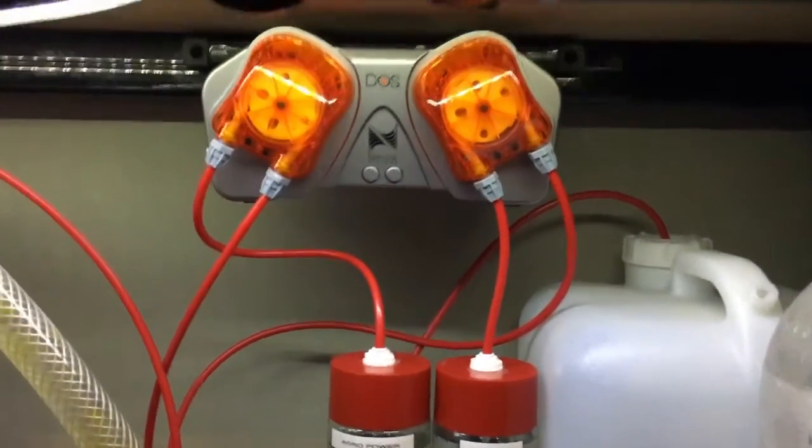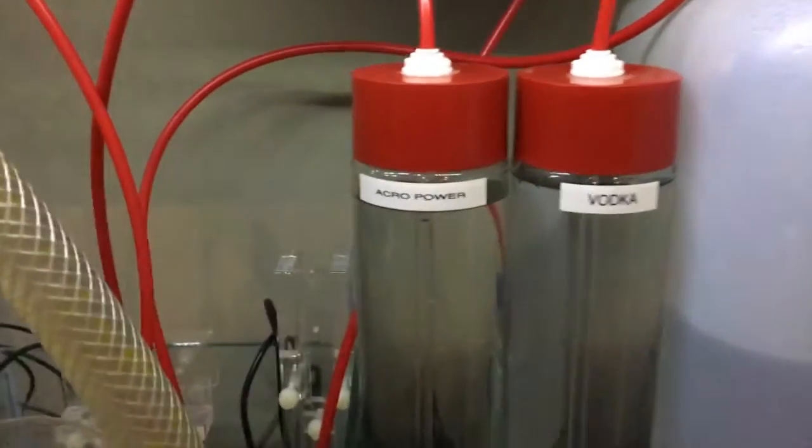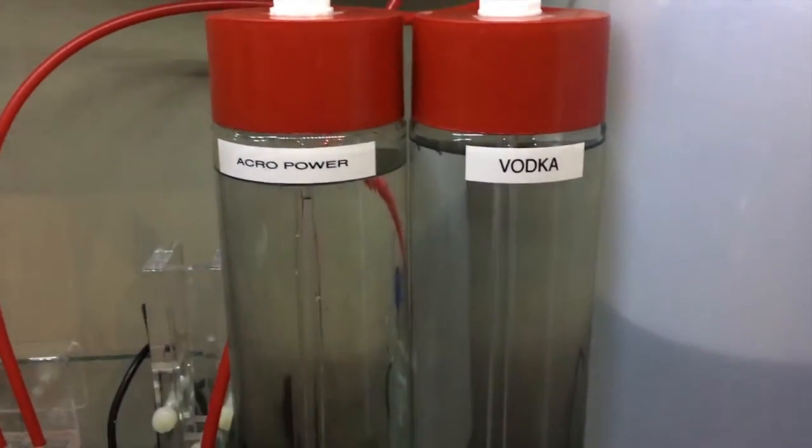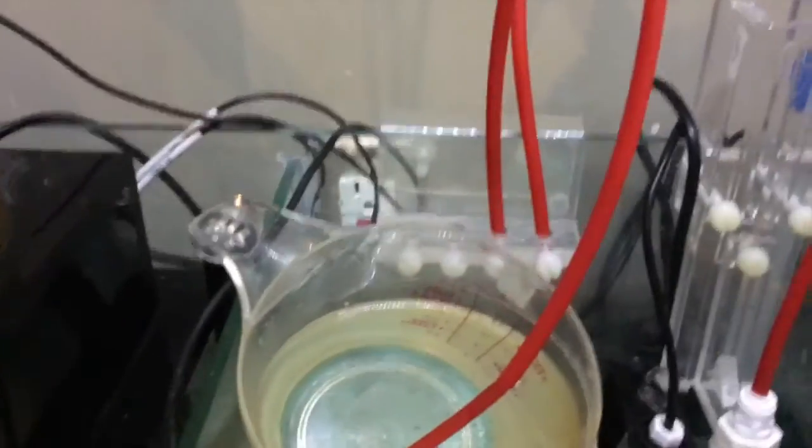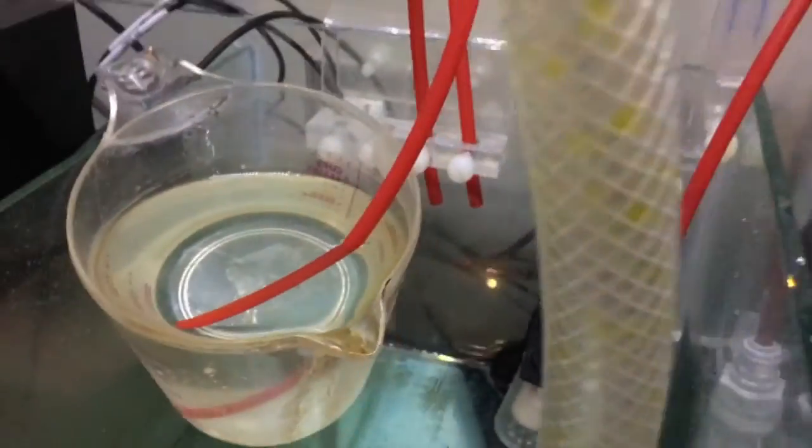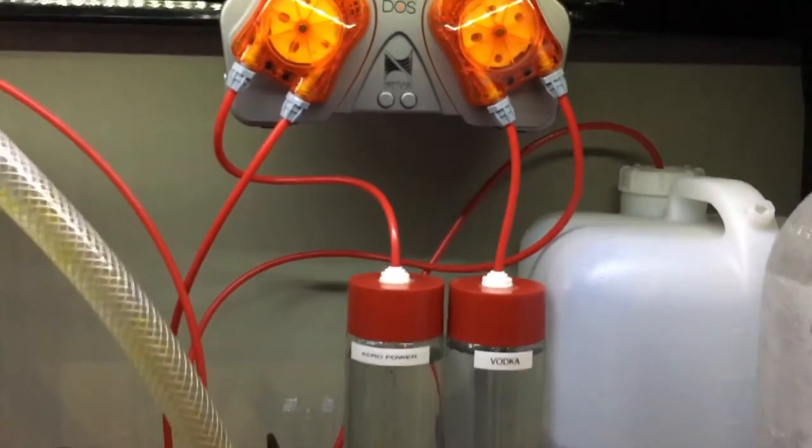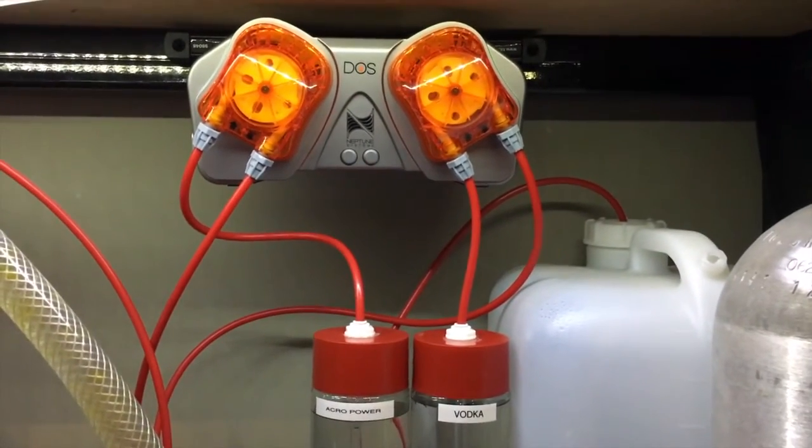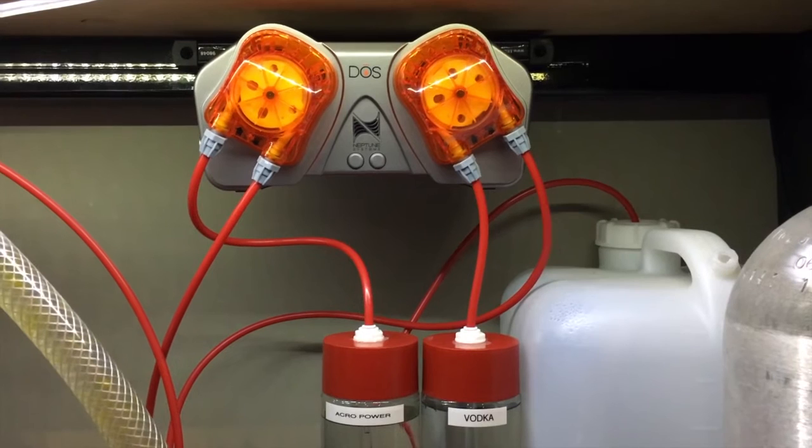Alright, so we've got the dose installed. They've got my tubes around. The first one's going to be Aquapower, and the next one's going to be Vodka. So I'm going to attempt to try the Vodka dosing. And they run to my little holder right there. And it'll drip into the tank. So next, we will get this plugged into the Apex head unit and start calibrating it.